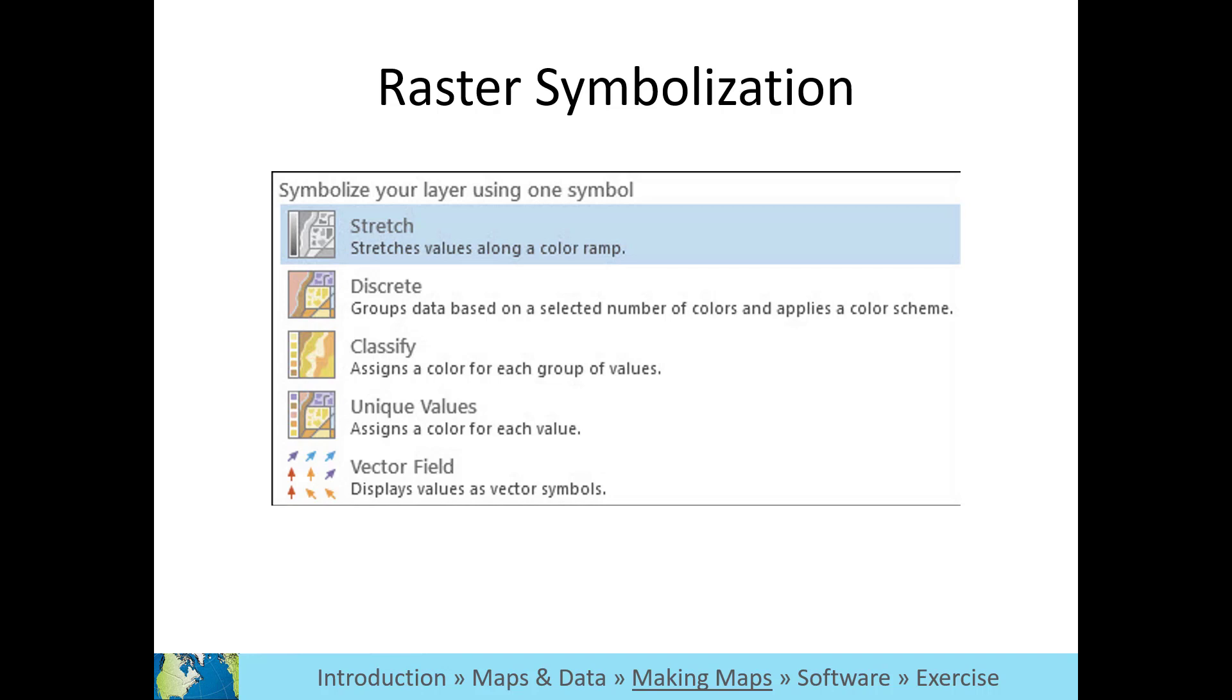Raster data can be displayed by showing all data values, grouping values into categories, varying colors across the surface based on the value, or creating a vector field using symbols, which you might see in a map of wind direction and speed.